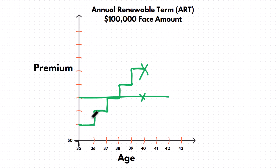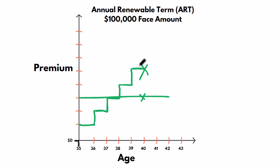So with an annual renewable term, he pays less in the beginning and ends up paying more later on, but he chooses to pay less in the beginning part of the term and then can cancel or just not renew whenever. To summarize: a level term policy's premiums are averaged throughout the duration of the term, while an annual renewable term policy's premium increases every year because the coverage is only in force for that one year, so he pays premiums on that one year.